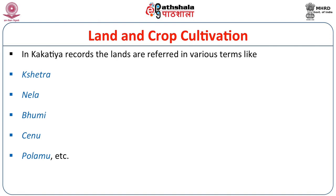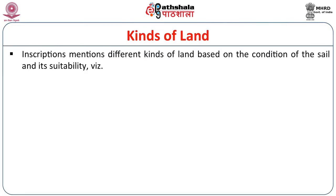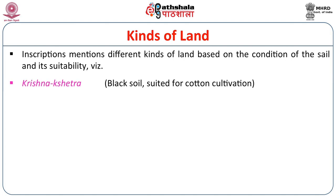In agricultural production, the lands were divided into different divisions. During the Kakathia period, records of lands are referred to in various technical terms in Kakathia inscriptions, referred to as Shetra, Nila, Bhumi, Senu, and Polamu. There are also references to different kinds of land in inscriptions of both the Kakathias and the Hoysala dynasty. The inscriptions mention different kinds of land based on the condition of the soil and its suitability, and the lands were divided into a number of categories on the basis of inscriptional evidence.